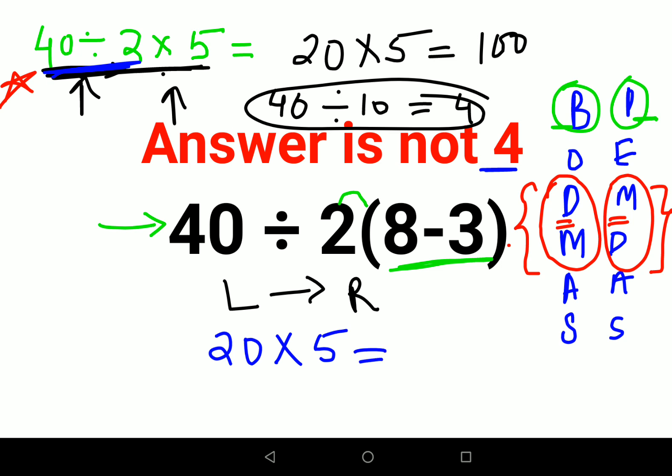So answer comes out to be 100. Please remember this thing very, very clearly. Now for your DIY, please tell me what is the answer of 30 divided by 6(2 plus 3). Let me know the answers for this one in the comment section. That's it for today, I will see you in the next video.